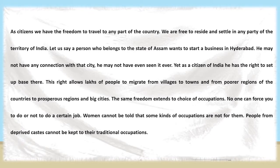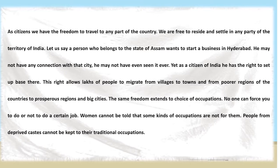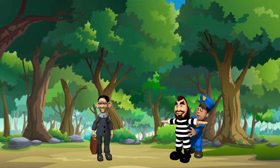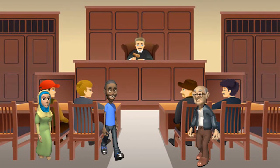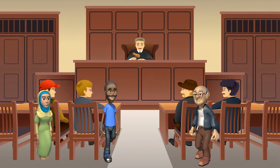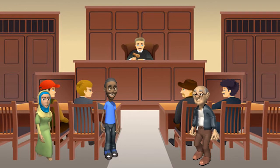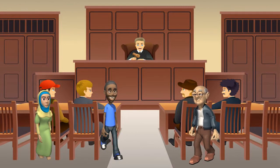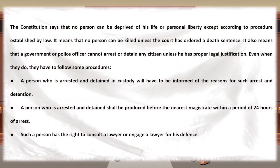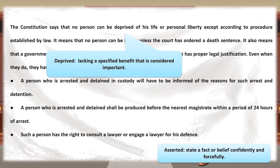Even women and underprivileged groups should be allowed to do whatever occupation they wish. No one is deprived of life or liberty except as asserted by law. No one can be killed unless the court orders so. Even the police or government cannot arrest someone without proper legal justification. Before arresting, some procedures must be followed. The person arrested must be informed of the reasons for arrest. Within 24 hours of arrest, the detained must be produced in front of the nearest magistrate. The arrested has the right to consult a lawyer for their defense.